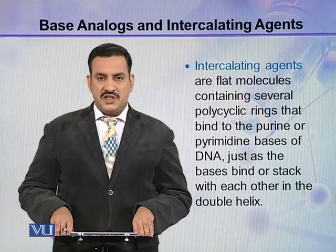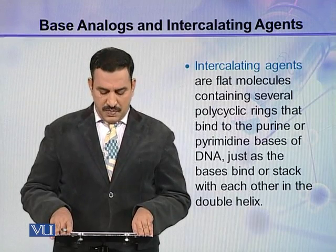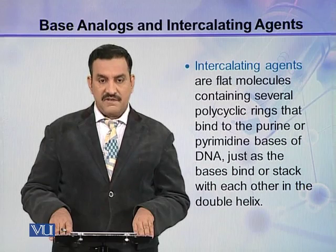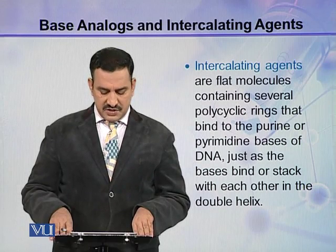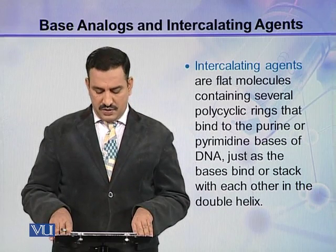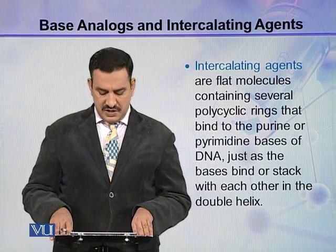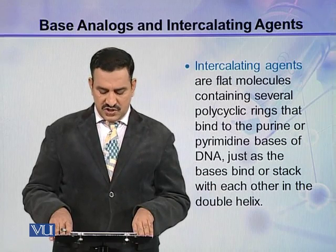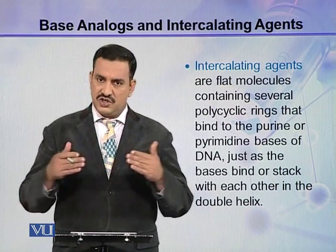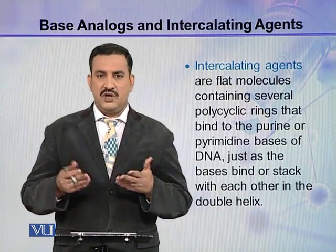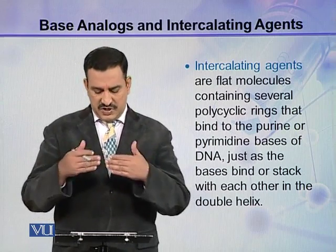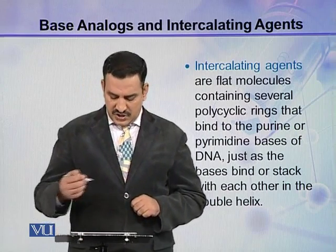Intercalating agents are flat molecules containing several polycyclic rings. They can bind to the purine or pyrimidine bases of DNA, just as the bases stack with each other in the double-stranded DNA molecule, and they also mistakenly base pair within the DNA molecule.